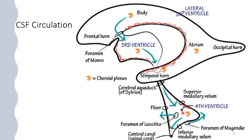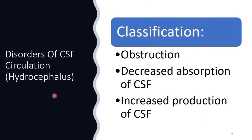About 80 to 150 ml of CSF is present, and it is produced and absorbed three to four times per day, so total 500 ml of CSF is produced daily. Hydrocephalus is a condition in which CSF accumulates in the drainage system of the brain, enlarging the ventricles, which eventually enlarges the brain and causes pressure on the brain. It can be classified by obstruction to CSF flow, decreased absorption by arachnoid villi, or increased production of CSF by the choroid plexus.